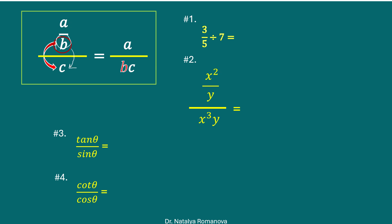For example, 3 fifths divided by 7. According to our rule, the denominator 5 gets multiplied by 7. And we have 3 over 5 times 7, so we have 3 over 35.